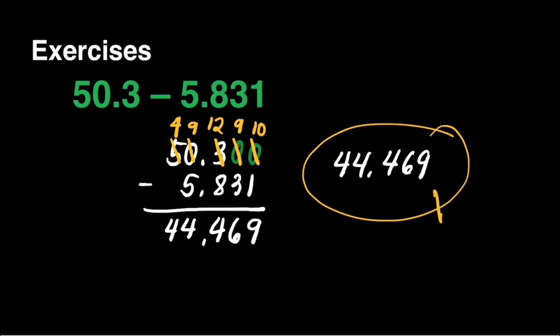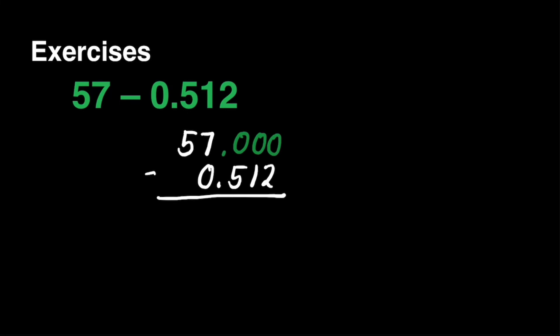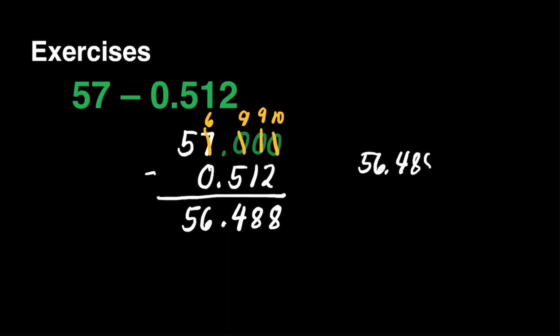And it's easy. The decimal point for 57 is at the back of 7 because that is a whole number. Then we have to add zeros — we'll add 3 zeros — because it's easier if we affix zeros, and then we're ready to subtract. 0 minus 2 cannot be, so we will borrow from 7. This 0 will become 10, this 0 will become 9, this 0 will become 9, and the 7 will become 6. We're ready to subtract: 10 minus 2 is equal to 8, 9 minus 1 is equal to 8, 9 minus 5 is equal to 4, then the decimal point. 6 minus 0 is 6, then bring down 5. Our final answer is 56 and 488 thousandths. And we're done.